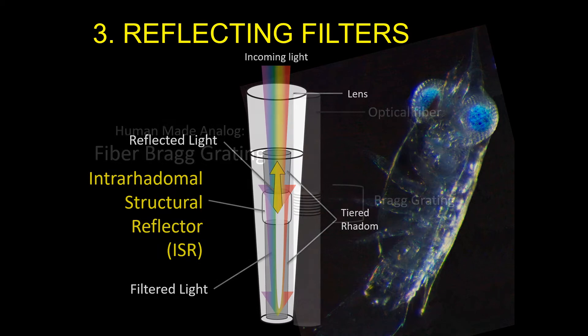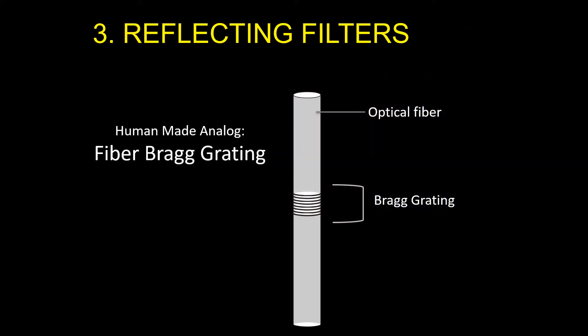This is the first natural example of something humans have already invented, the fiber-brag grading, which is used in sensors for a variety of industries. Though quite different in structure, fiber-brag gradings and ISRs have a similar performance, where certain wavelengths are reflected back towards the light source, while the remaining wavelengths pass through.